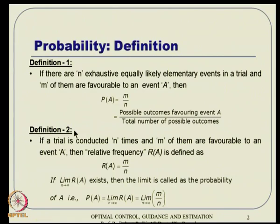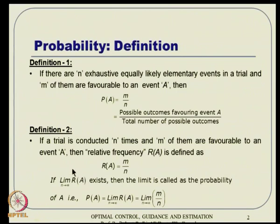Definition two tells something similar but in a slightly different way. If a trial is conducted n times and m of them are favorable to any event A, then there is something called relative frequency r_A, which is defined as m over n. It does not define probability directly, because the sample space is not large enough. The relative frequency turns out to be m by n, and in the limit where n tends to infinity, if the limit exists, then that limit is defined as probability. Essentially, the number of samples must be large before you can define probability.